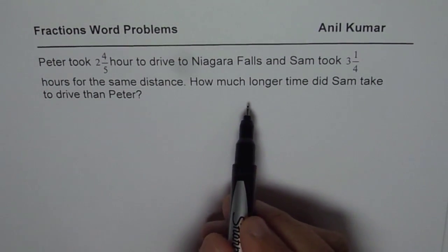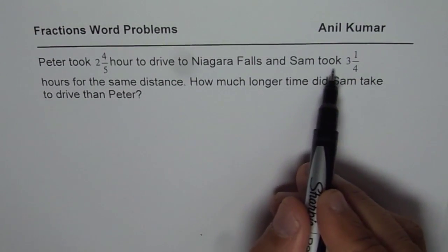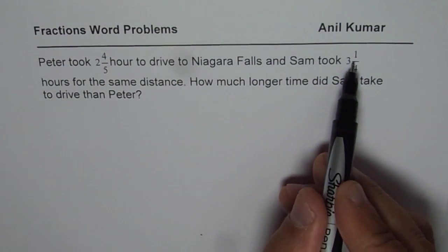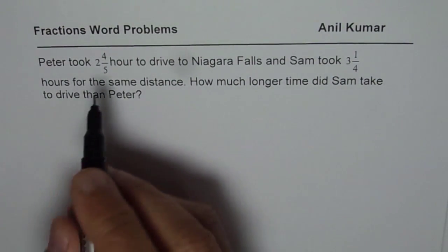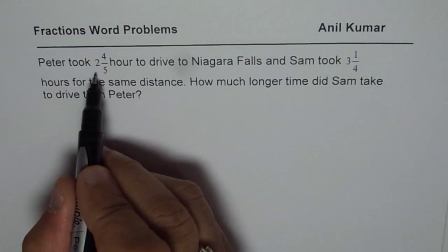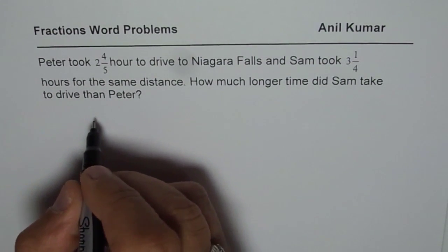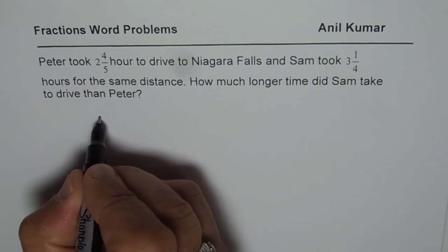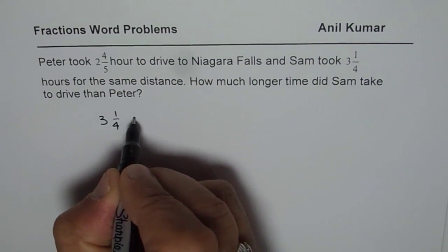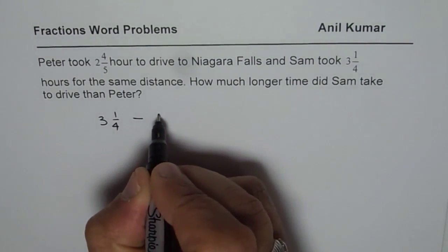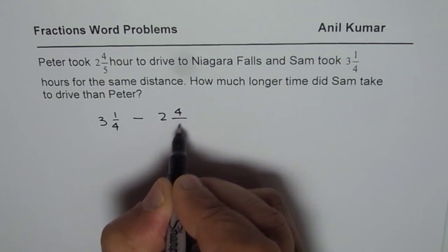That means we are interested in the difference of time. Sam took 3 and 1/4 hours and Peter took 2 and 4/5 hours. So we need to find the difference between 3 and 1/4 and 2 and 4/5.